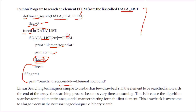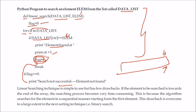Linear searching is simple but it has some drawbacks. If there are 1 lakh elements or more, and the element is near the end, the searching will be time consuming because it searches sequentially one by one. To overcome this drawback, we use binary search.